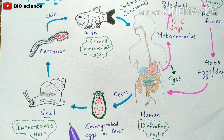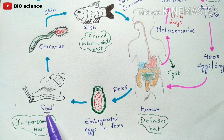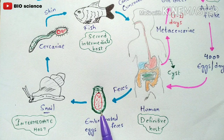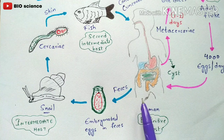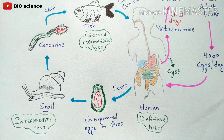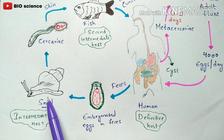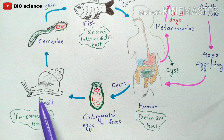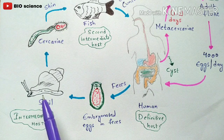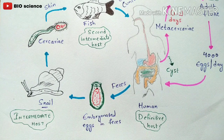Snails present in the water start feeding on the feces material, which contains the embryonated eggs of the liver fluke excreted by human beings. The snails consume this feces material containing the embryonated eggs. Remember: the snail is considered the primary intermediate host, also called the first intermediate host. Inside the snail, the embryonated eggs enter the digestive system, which contains acidic digestive juices, and hatching begins.